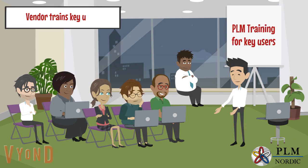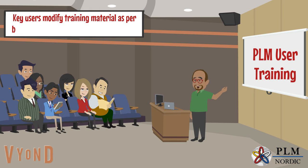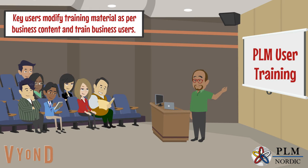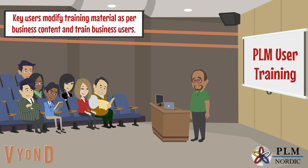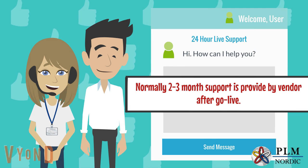Vendor trains the key users, and then key users modify training material as per business content and train business users. Normally 2 to 3 months of support is provided by the vendor after go-live.